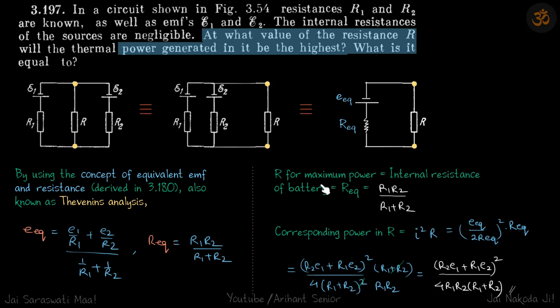Now for maximum power, internal resistance of the battery must be equal to the resistance of the external resistor. So in this case, the value of R must be equal to R equivalent, which is R1 R2 by R1 plus R2.